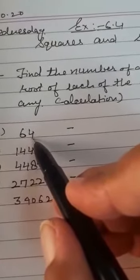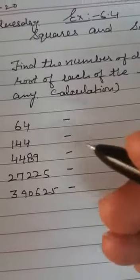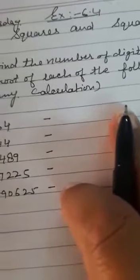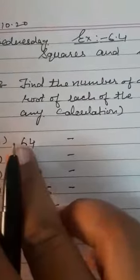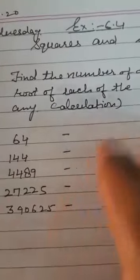If there are 2 digits or 3 digits in a number, then the square root answer digit will be... if a number has 2 digits, then the square root answer has 1 digit.